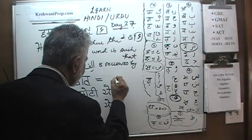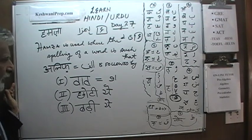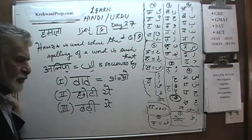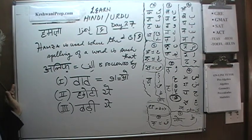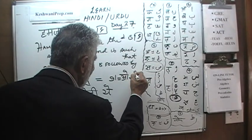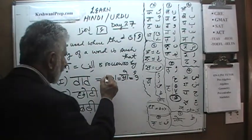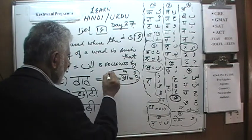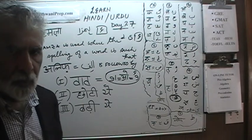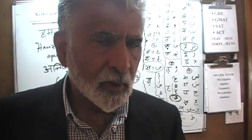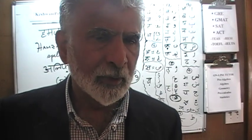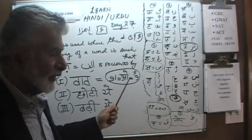We did a whole bunch of words yesterday which had the O sound in them. But instead of writing it as Aleph followed by Wao, we take the Wao and put a Hamza on it — that's all there is to understand. No word in Urdu language begins or ends with Hamza; Hamza always appears in the middle of the spelling.